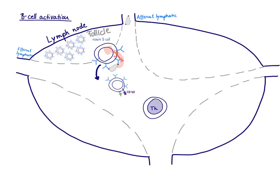The binding of the antigen to multiple B-cell receptors is going to be Signal 1, and this is going to start activating the B-cell. The consequence of Signal 1 is that the antigen is going to be taken up by endocytosis, and then it's going to be displayed on MHC class 2 molecules.